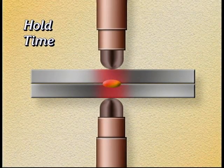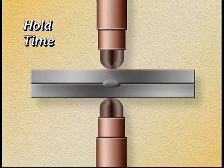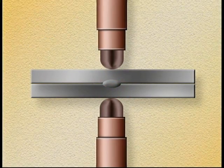And hold time: the time during which the electrode tips remain closed after the weld current has ceased, allowing the weld nugget to cool and solidify.